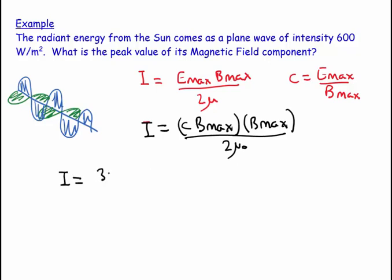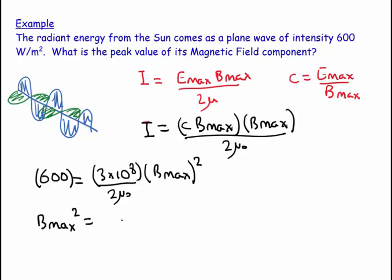So 600 in SI units is equal to that over 2 mu naught times B max squared. That gives me B max squared is equal to 1200 mu naught over 3 times 10 to the 8.